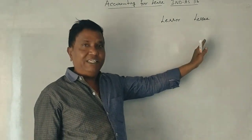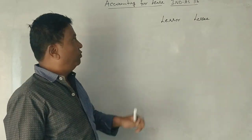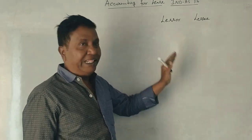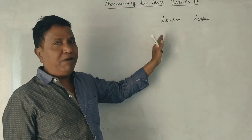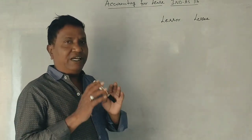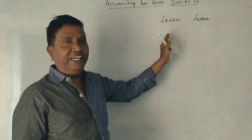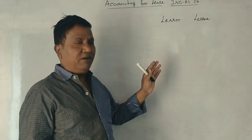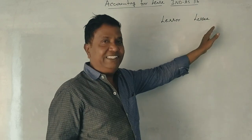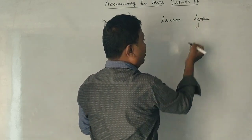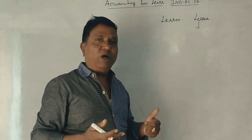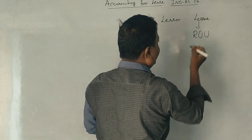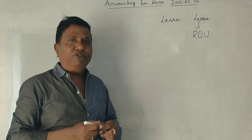We have to deal with lessor books and lessee books. The lessee pays a monthly or annual lease rent to the lessor. The lease rent is a fixed amount paid according to their agreement. The lessee becomes the user of the asset, or the person who has the right to use the asset — this is what we call ROU, the right of use.